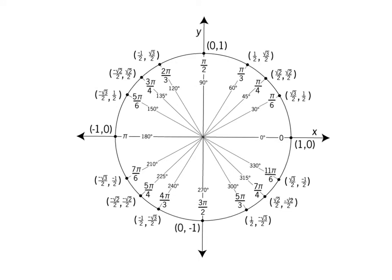So the pi over 2, which was equivalent to 90; the pi, which is equivalent to 180 degrees; the 3 pi over 2, which is equivalent to 270; and then over here the 0 degrees and 0 radians — and this, remember, is also 360 degrees when you go a full circle, or 2 pi if it's asking you to list it in radians.